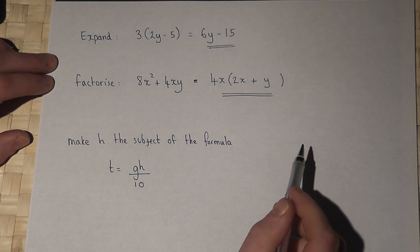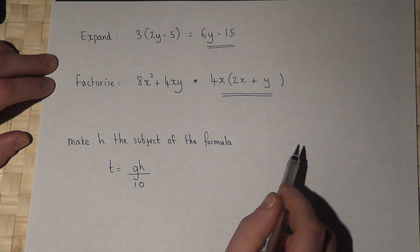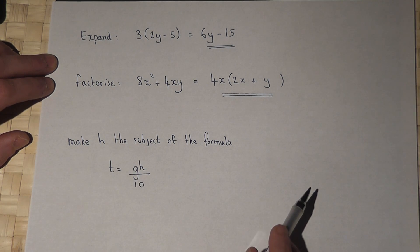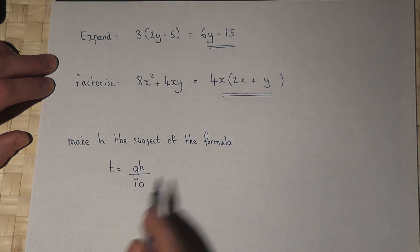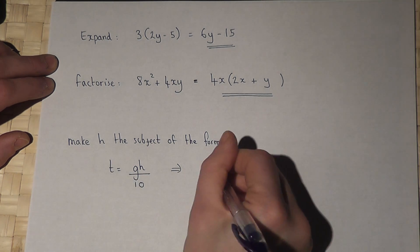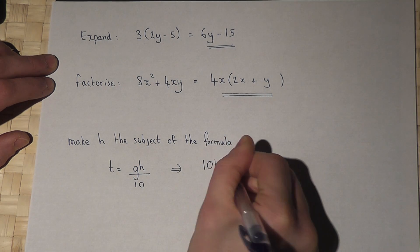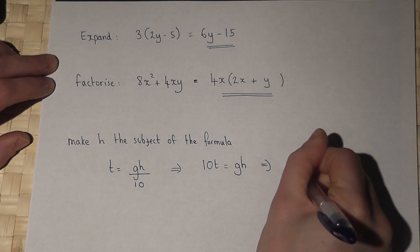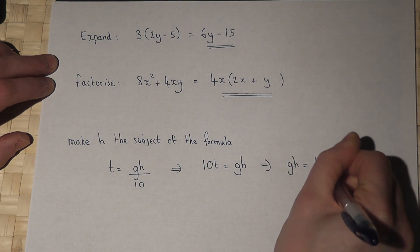Now in the third part, I want to rearrange this formula to get h equals. I've got t equals gh all over 10. So if I times by 10, I get 10t equals gh, which I can rewrite as gh equals 10t.